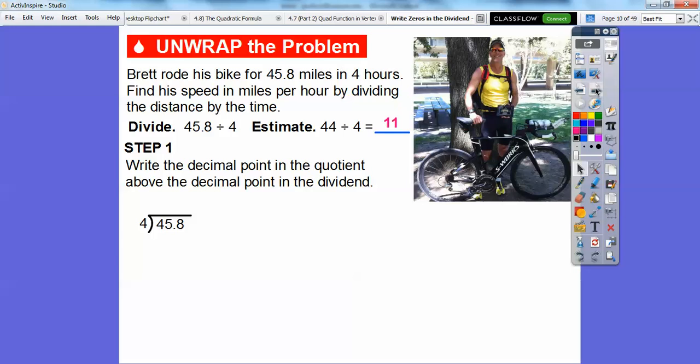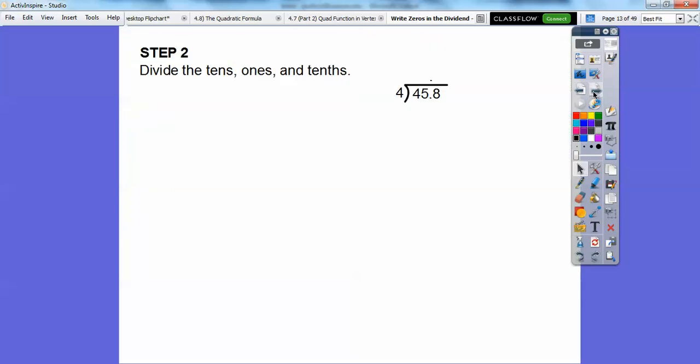Let's write the decimal point in the quotient above the decimal point in the dividend. It's what we're dividing into right here. Then what we're going to do is divide the tens, the ones, and the tenths. This eight is in the tenths spot, so this actually reads 45 and eight tenths. The four is in the tens, the five is in the ones, and the eight is in the tenths. Let's go ahead and get going.